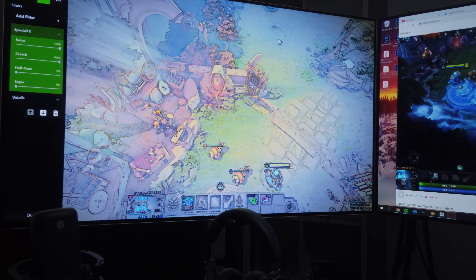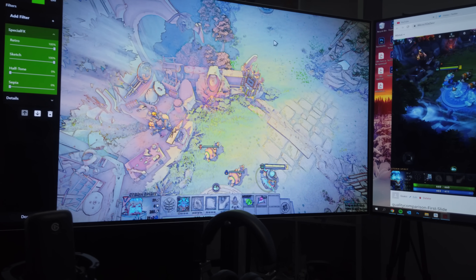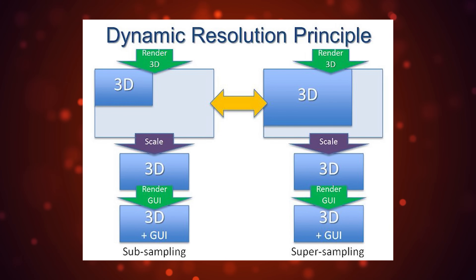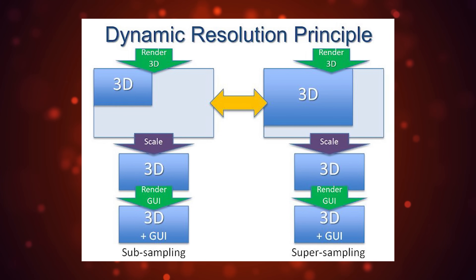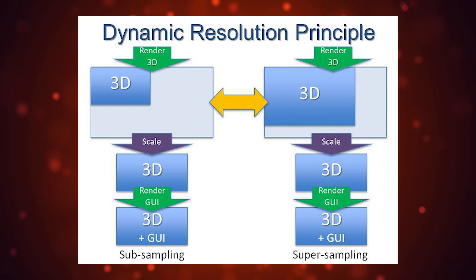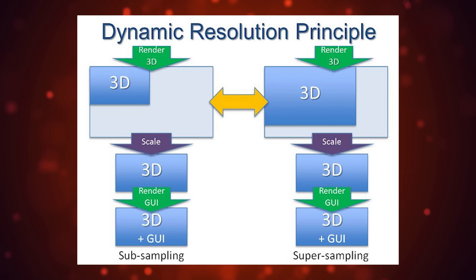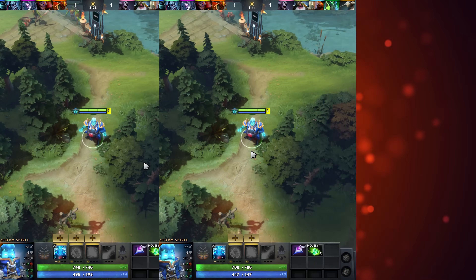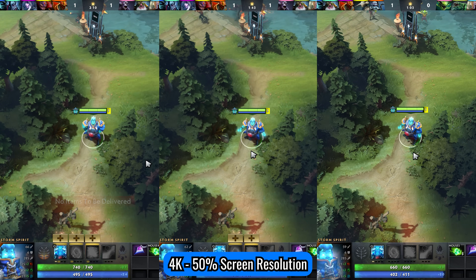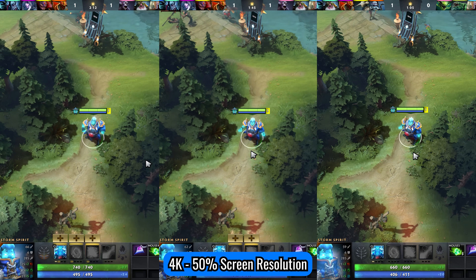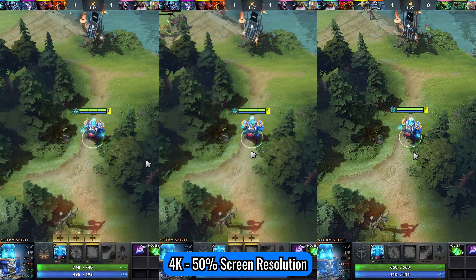From what I gather, FSR upscales in both a linear and non-linear way — essentially what could be interpreted as dynamic resolution on AMD's side — which then depends on the game developer to implement correctly. With those benchmarks aside, let's get to what I think is most important: the image quality comparison.